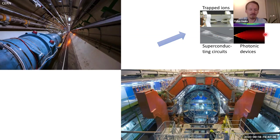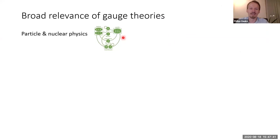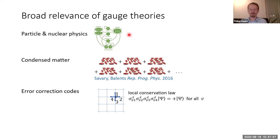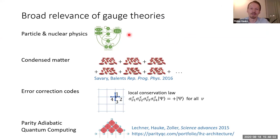Gauge theories — here is a sketch of the standard model of particle physics — but they're not only relevant for high energy or nuclear physics. They also appear as emergent phases in condensed matter. We can also understand error correcting codes as gauge theories. Back in Innsbruck, we had a paradigm for adiabatic quantum optimization which can also be understood as a gauge theory. So there's huge interest in gauge theories from different fields and perspectives, and this has driven a large experimental and theoretical effort to implement gauge theories in quantum devices.